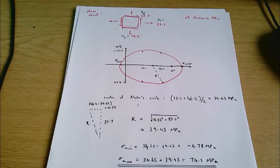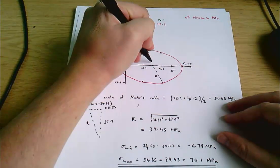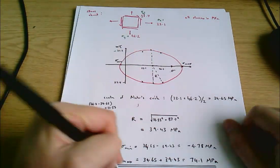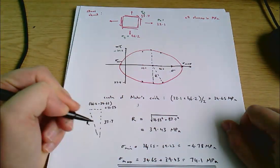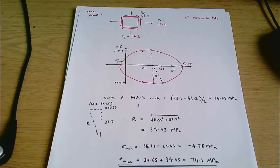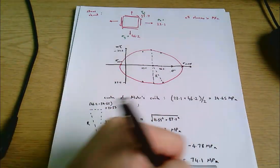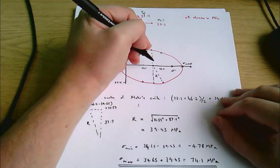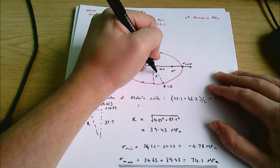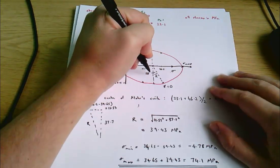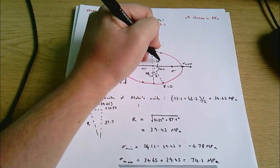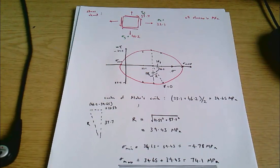The maximum shear stress is the point on the circle at a distance of R straight up from the centre. So tau max equals R, which is 39.43 megapascals. If you want to calculate angles from Mohr's circle, the starting orientation is defined as theta equals zero, and then the angle to the maximum shear stress plane is 2 theta tau max, and the angle to the principal plane is 2 theta p.